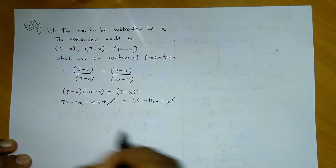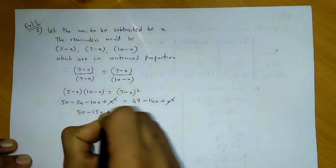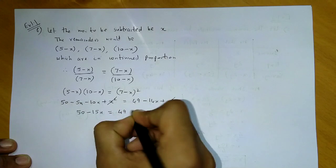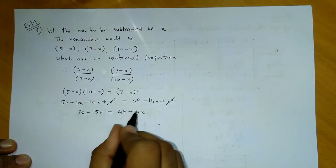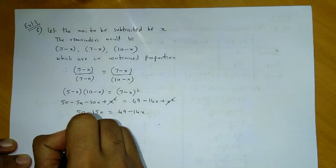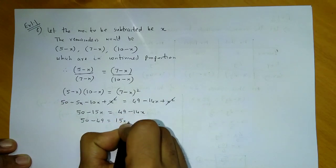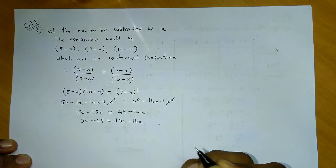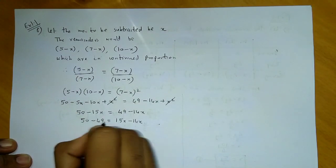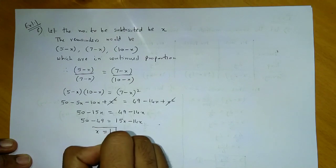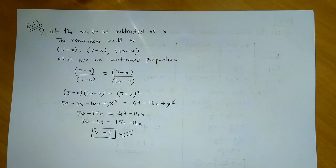x squared gets cancelled. So we have 50 minus 15x equals 49 minus 14x. Bringing x terms to one side: 50 minus 49 equals 15x minus 14x, which gives 1 equals x. So the number which has to be subtracted is 1.